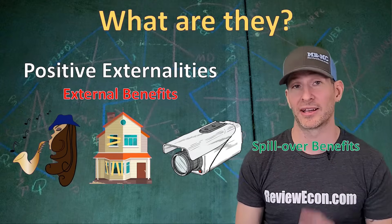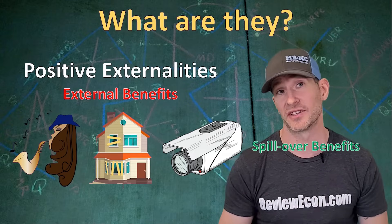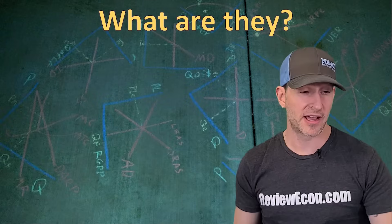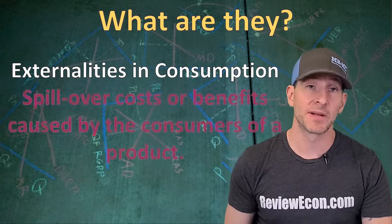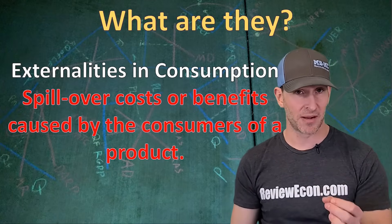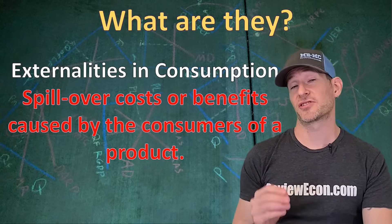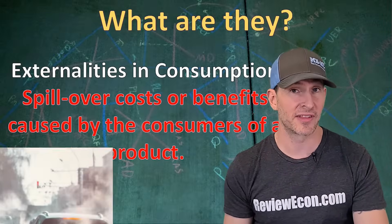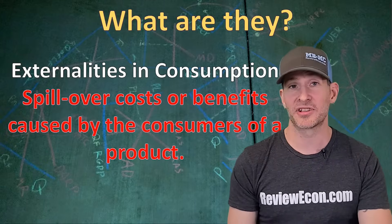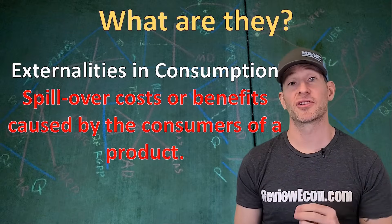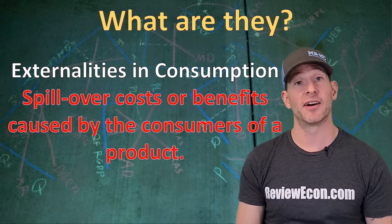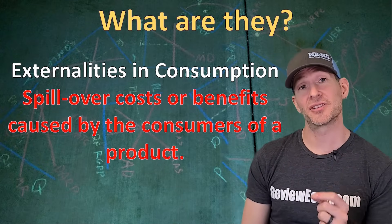Positive externalities are sometimes called spillover benefits because they spill over out of the market and onto people who aren't involved in the purchase or sale of these products. One way externalities can be produced is as a result of the consumption of a product — these are called externalities in consumption. Examples include leftover cigarette butts after somebody finishes a cigarette, smog created by people driving their cars, a neighbor's beautiful landscaping, and vaccinations providing protection to those nearby who don't get vaccinated.